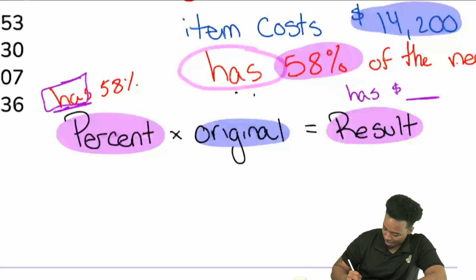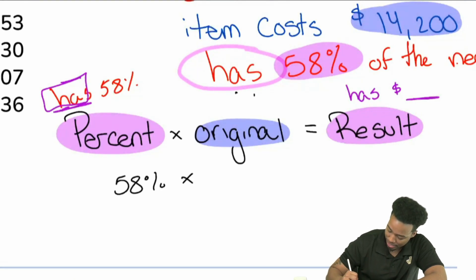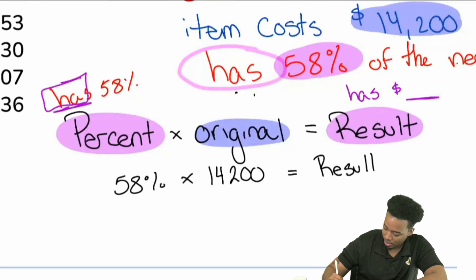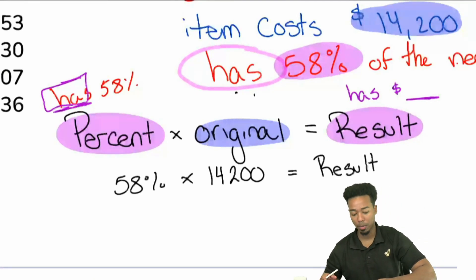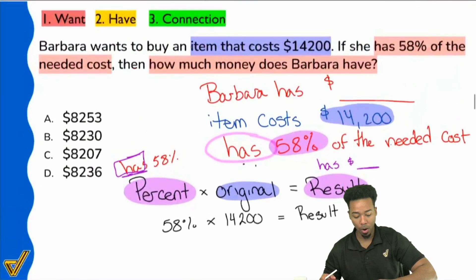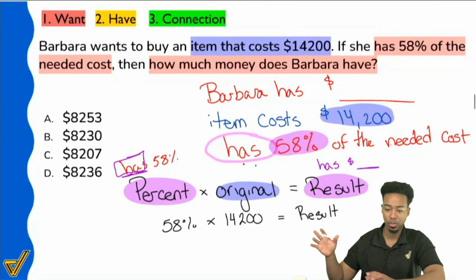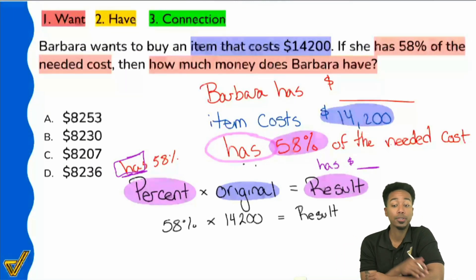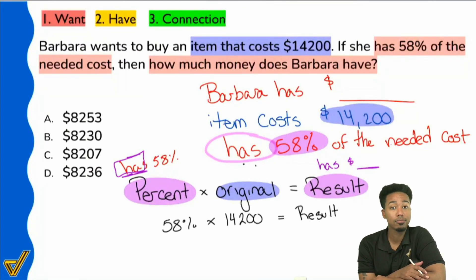We're going to plug everything in: 58% times that original value of $14,200. That gives us the result, and that result is the amount of money Barbara has. All we need to do now is figure out what 58% of $14,200 is, and we're good.